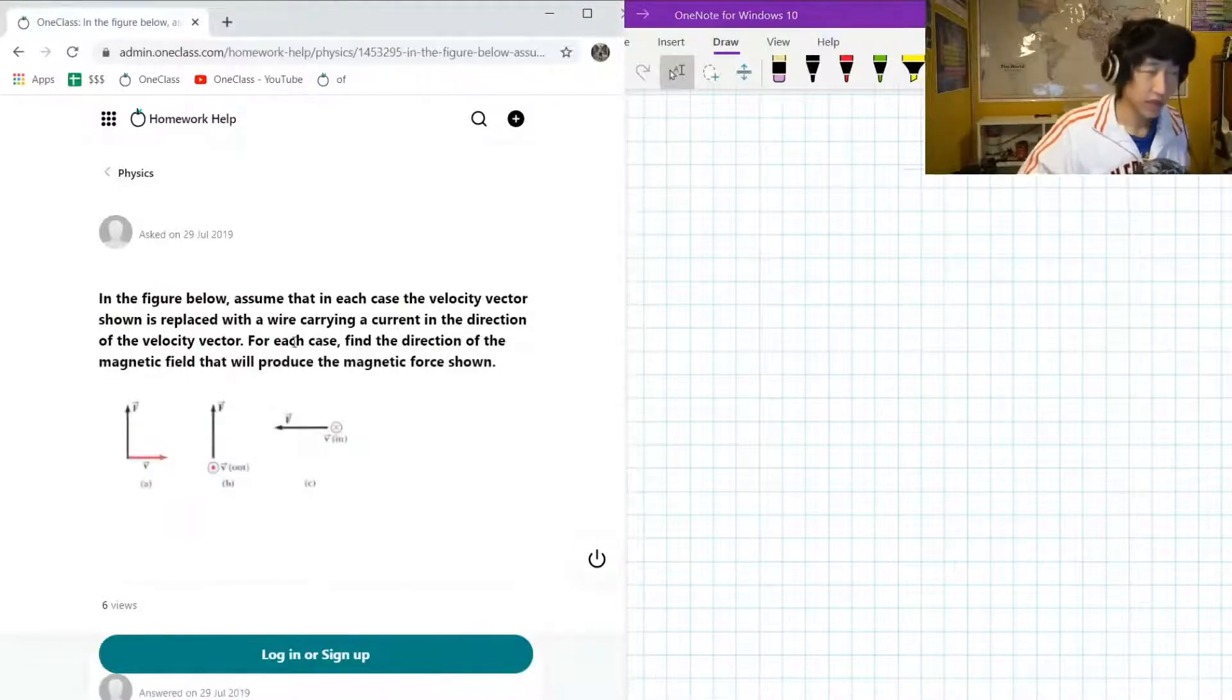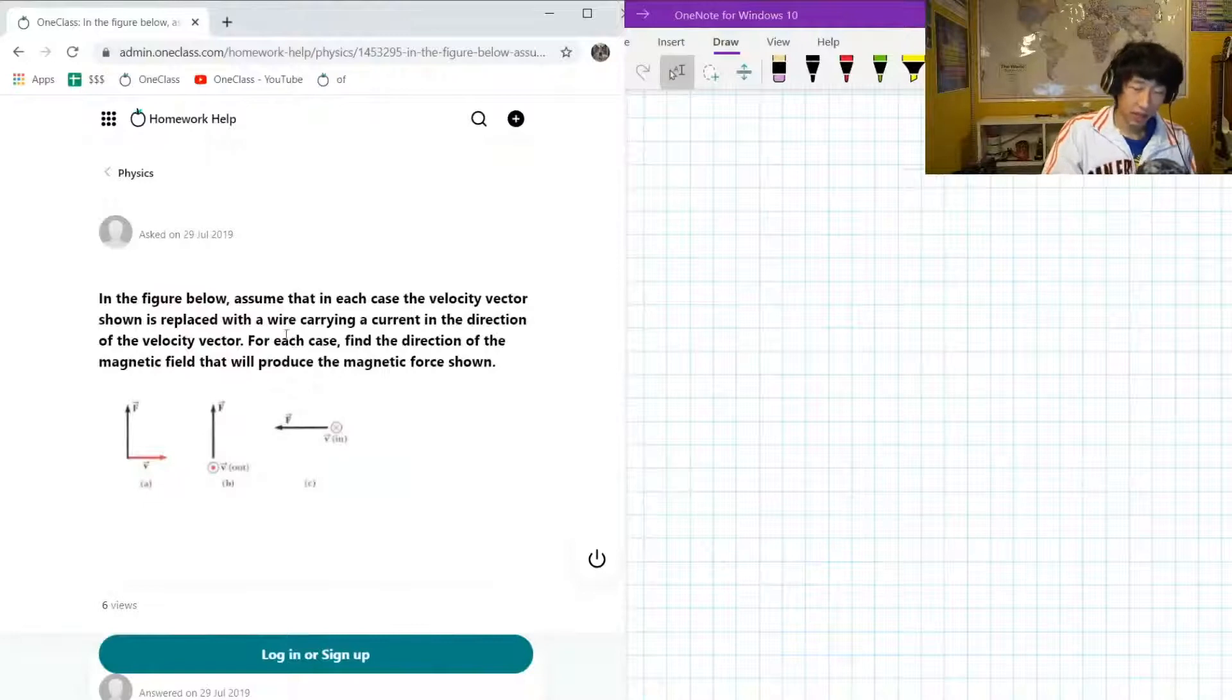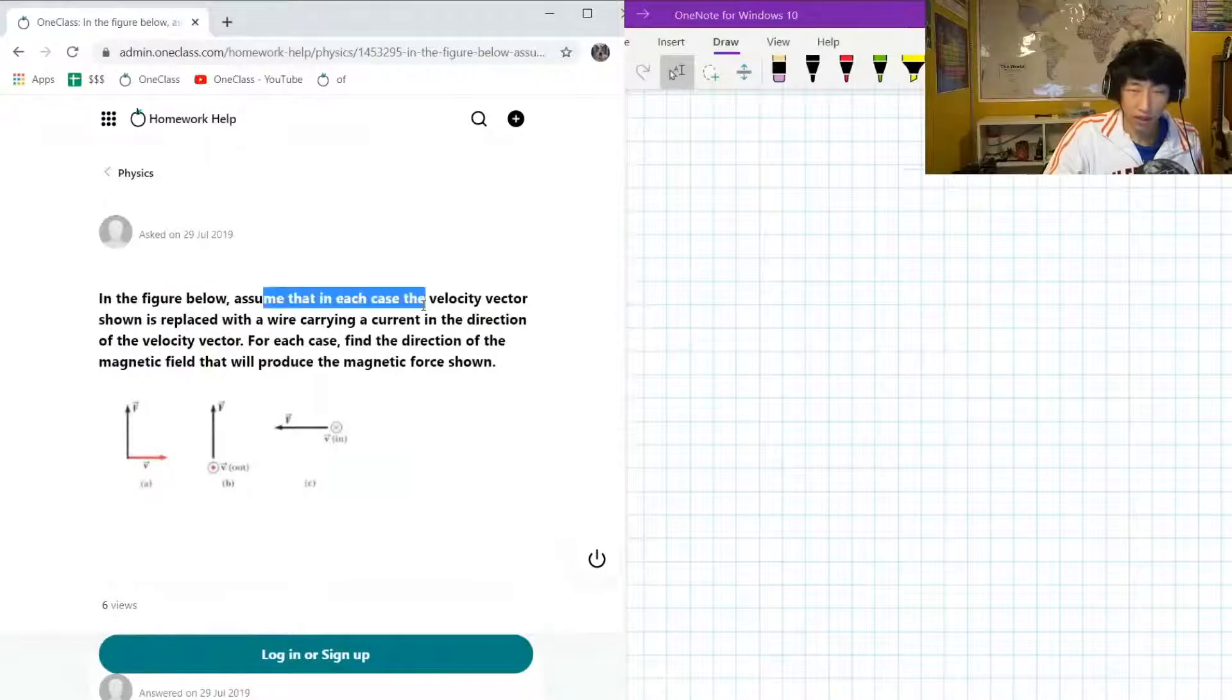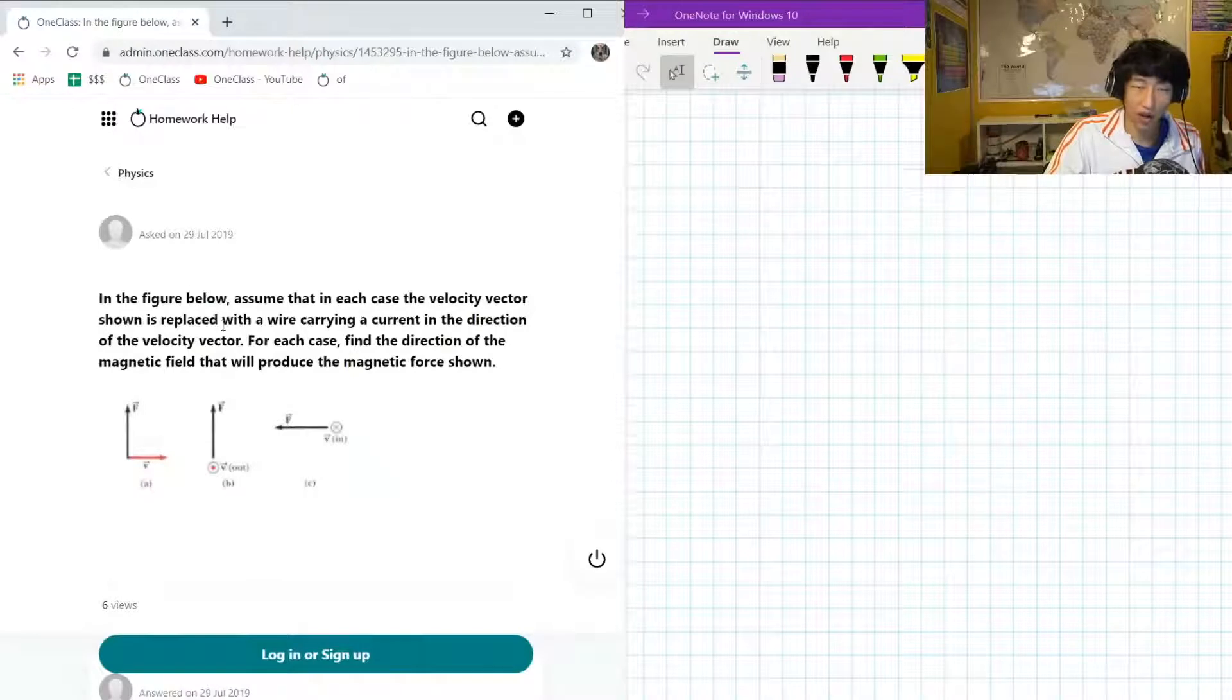Okay, so here we have the next question on our menu today, and it is presenting us with the following situation. In the figures below, assume that each velocity vector is actually replaced by a wire carrying current in the direction of the velocity vector. For each case, we need to find the direction of the magnetic fields that will produce the force as shown.